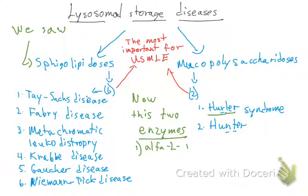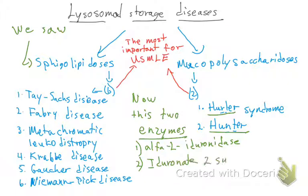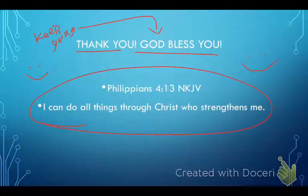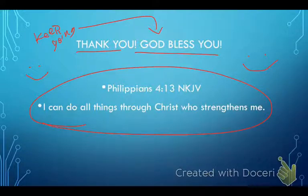For Hurler syndrome, the deficient enzyme is alpha-L-iduronidase. For Hunter syndrome, a mnemonic: hunters eat (ate), so the enzyme is iduronate-2-sulfatase. Hunter syndrome is X-linked recessive while Hurler syndrome is autosomal recessive. Thank you so much for watching, and God bless you all — keep up the good work!